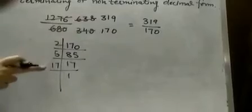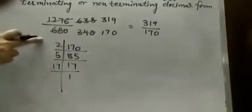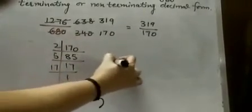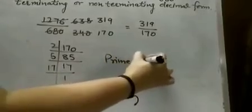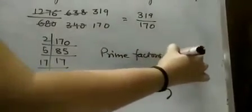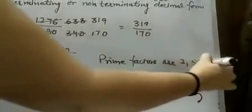But, in this prime factorization, we have a number 17 other than 2 and 5. So, the prime factors are 2, 5 and 17.